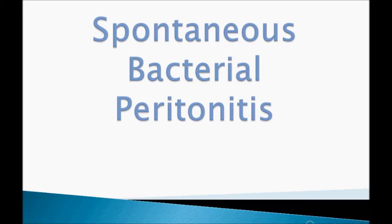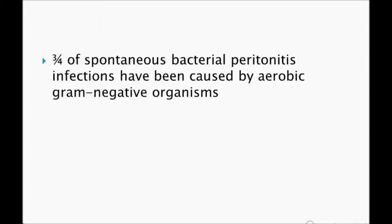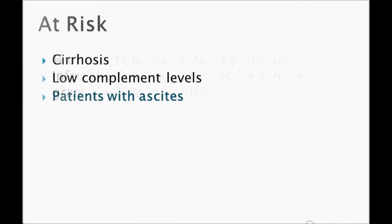Spontaneous bacterial peritonitis — definition: it's an acute bacterial infection of ascitic fluid. Three-fourths of SBP infections have been caused by aerobic gram-negative organisms.